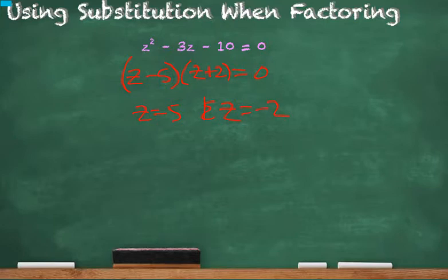However, we have to recall that this problem was not given to us with z variables. We want to solve for x, not z. So, we said, well, if z is equal to x cubed, and z is equal to 5, we're using substitution again. This is called back substitution.